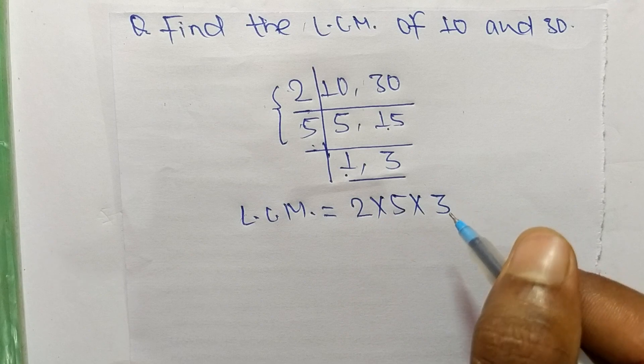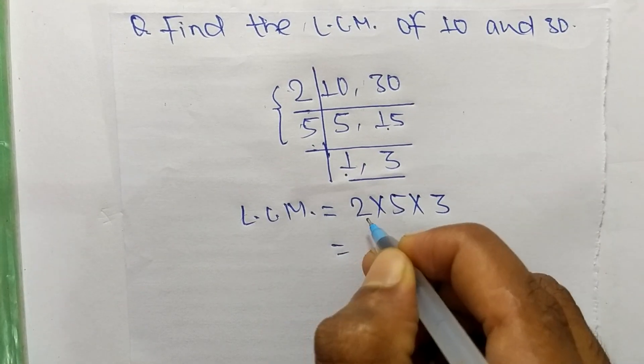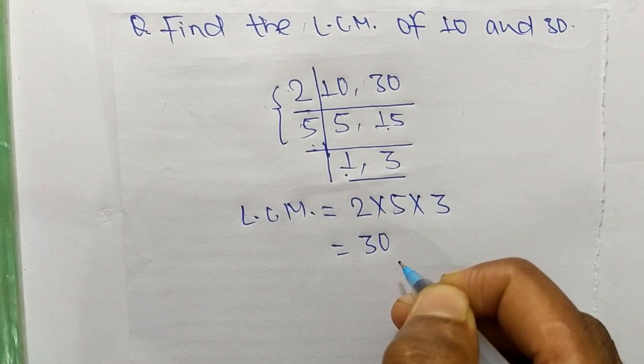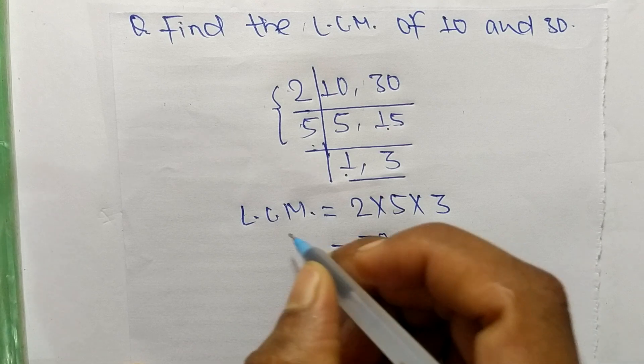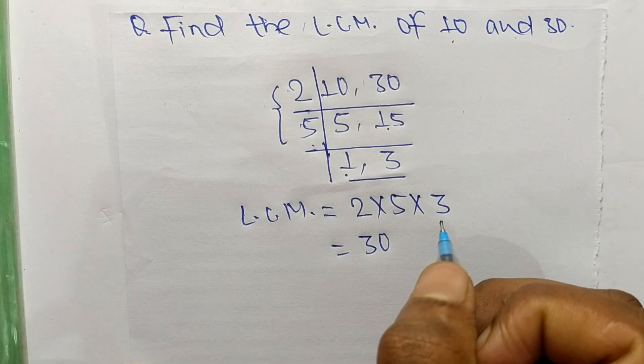So we neglect here 1. So 2 times 5 means 10 and 10 times 3 means it is 30. So 30 is the LCM of 10 and 30. So this much for today and thanks for watching.